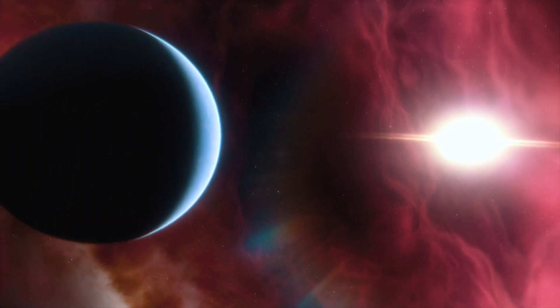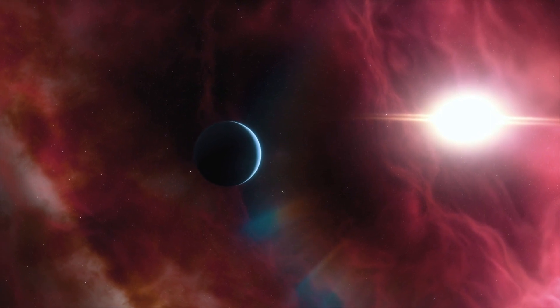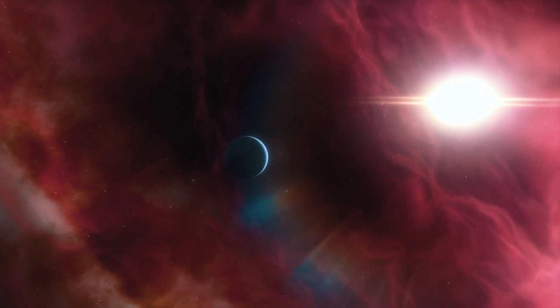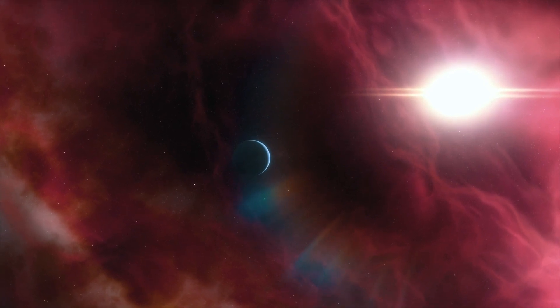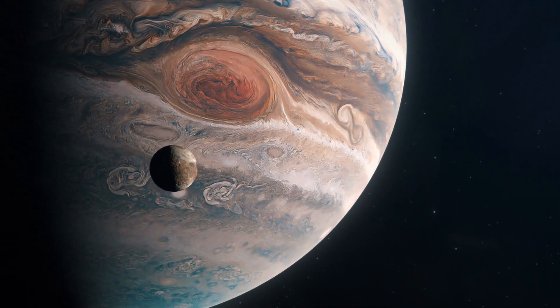To begin, we must define what an exoplanet is. Any planet that orbits a star outside of our solar system is known as an exoplanet, or extrasolar planet. Keep in mind that these exoplanets range in size from massive gas giants like Jupiter to small rocky worlds like Mars and Earth.